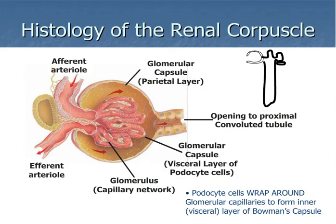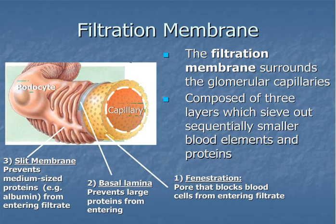Now let's look more closely at the renal corpuscle, which consisted of the glomerulus and Bowman's capsule, whose function is to filter blood. Blood enters the glomerulus via the afferent arteriole, fluid is forced into Bowman's capsule, and remaining cells exit through the efferent arteriole. The walls of the capillaries and the visceral layer of Bowman's capsule form the filtration membrane, which separates liquid components of blood from cellular components. It is composed of three layers that sequentially sieve out smaller and smaller elements.